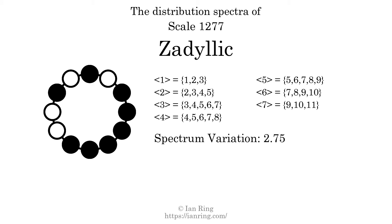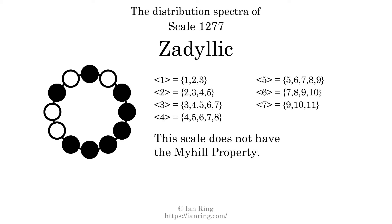The spectrum variation is the sum of all the widths, divided by the number of tones. The spectrum variation of this scale is 2.75. Since the variation is greater than 0, this indicates that the scale is not perfectly even. The highest spectrum width is 4. Since this is greater than 1, we know that this scale is not maximally even. If every spectrum has exactly 2 specific intervals, we call that the Myhill property. This scale does not have the Myhill property. Since the generic interval ranges overlap, this scale is an improper scale.